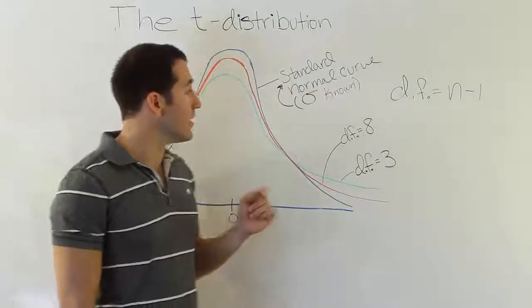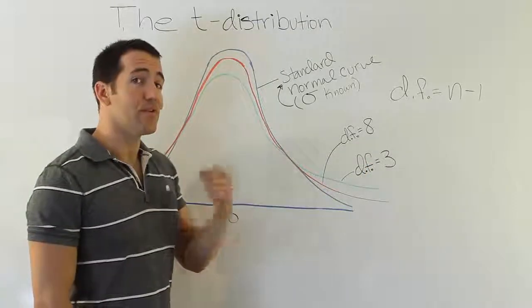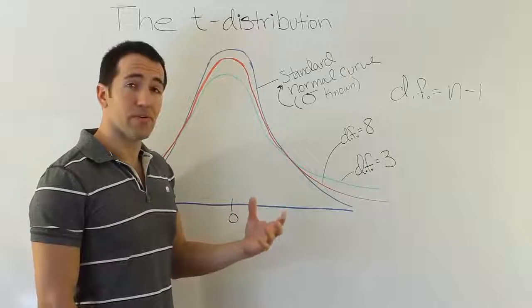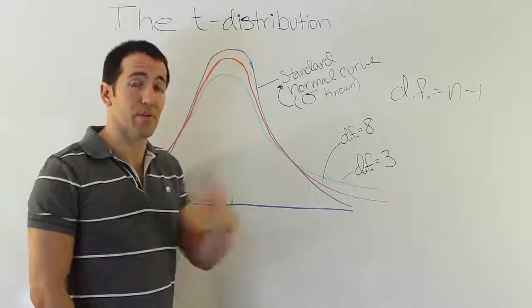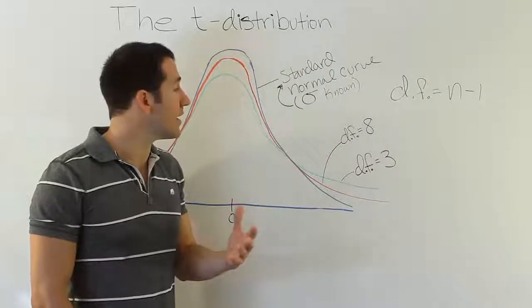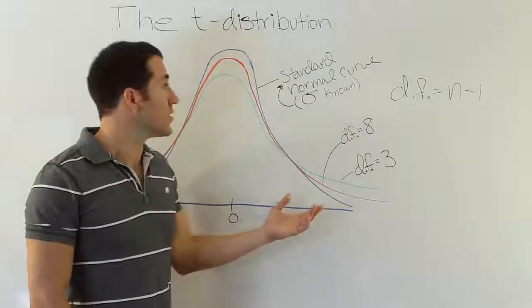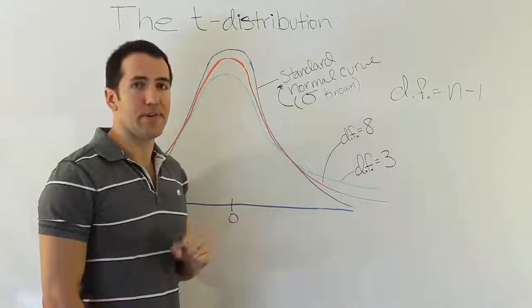In the case of the t-distribution, we would assume that, again, normality is known to be true. So we'd say we think that the phenomena we're working with is normally distributed. So maybe we're dealing with human heights again, and we have a sample size that's large enough to assume that human heights are normally distributed. So for the t-distribution, we assume normality as well, but we don't know the population standard deviation.